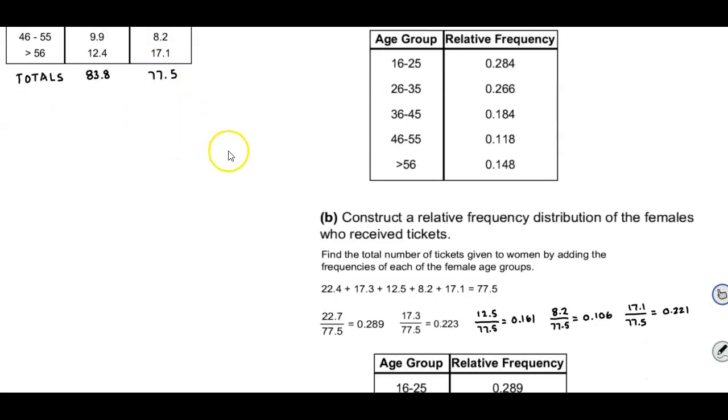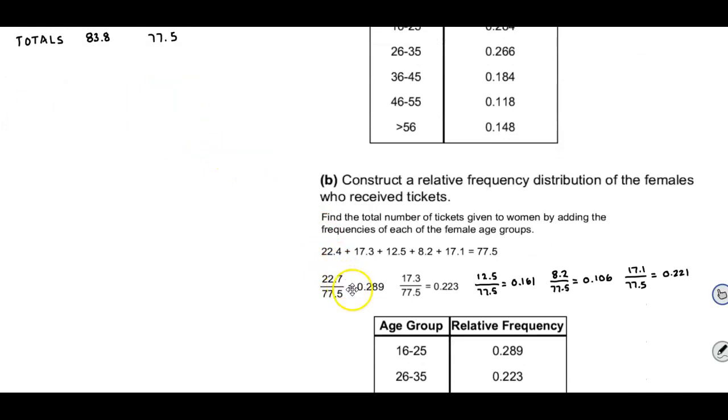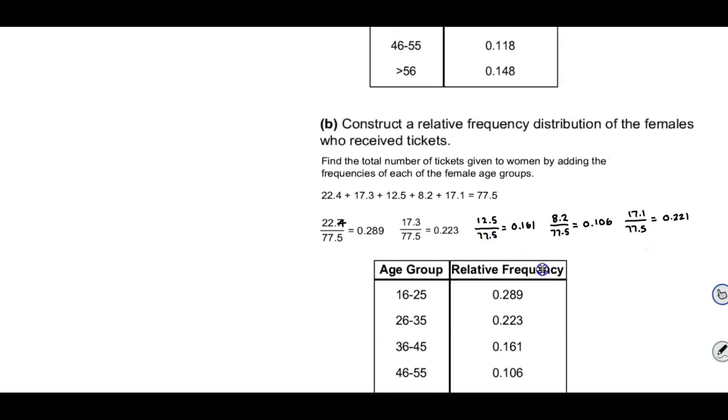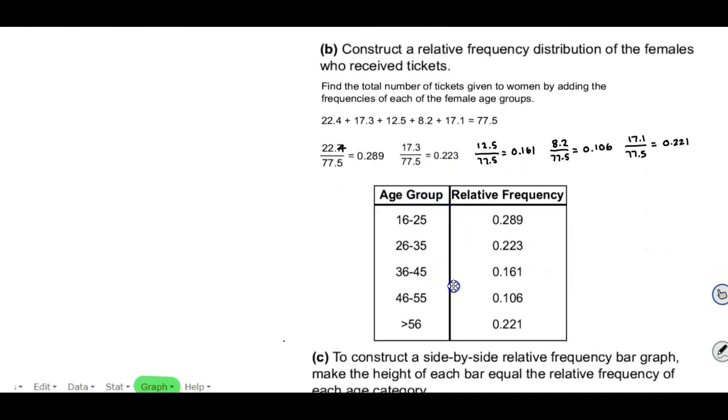So the first one is 22.4. So it would be 22.4 over 77.5 which is equal to 0.289. 17.3 over 77.5 gives you 0.223. 12.5 over 77.5 gives you 0.161 and so on. And therefore that's how we're getting the results for the relative frequency distribution for females who received tickets.